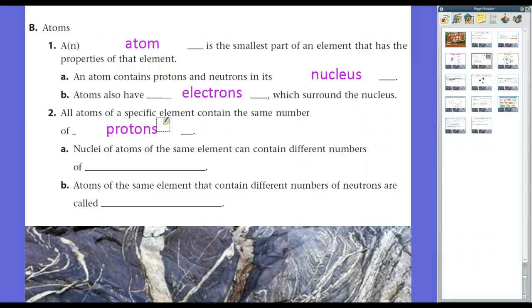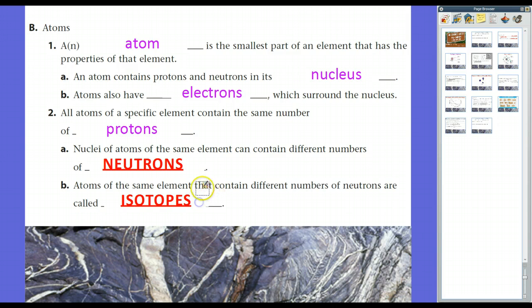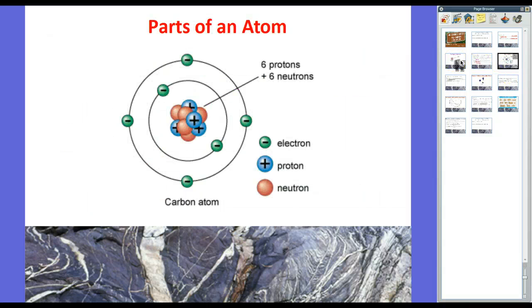And all atoms of the same element, whether it's an iron element, a uranium element, a neon element, so on and so forth, always have the same number of protons. Atoms will have different numbers of electrons, and when they have an unbalanced charge, will form an ion. But what we're concerned with in terms of radioactive decay and radiometric dating is the number of neutrons. And the nuclei of atoms of the same element can contain different numbers of neutrons. And atoms of the same element that contain different numbers of neutrons are what we call isotopes.